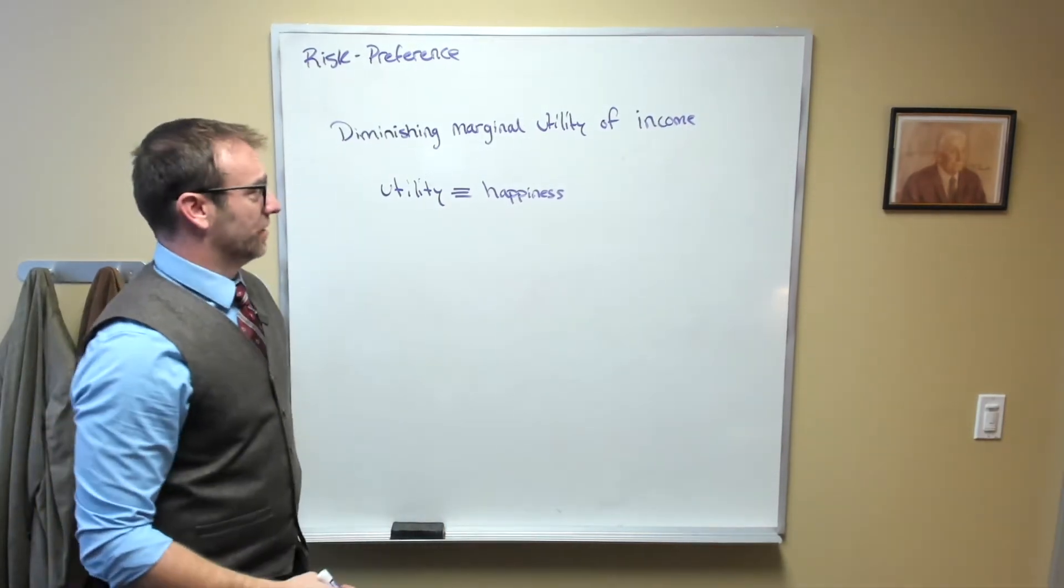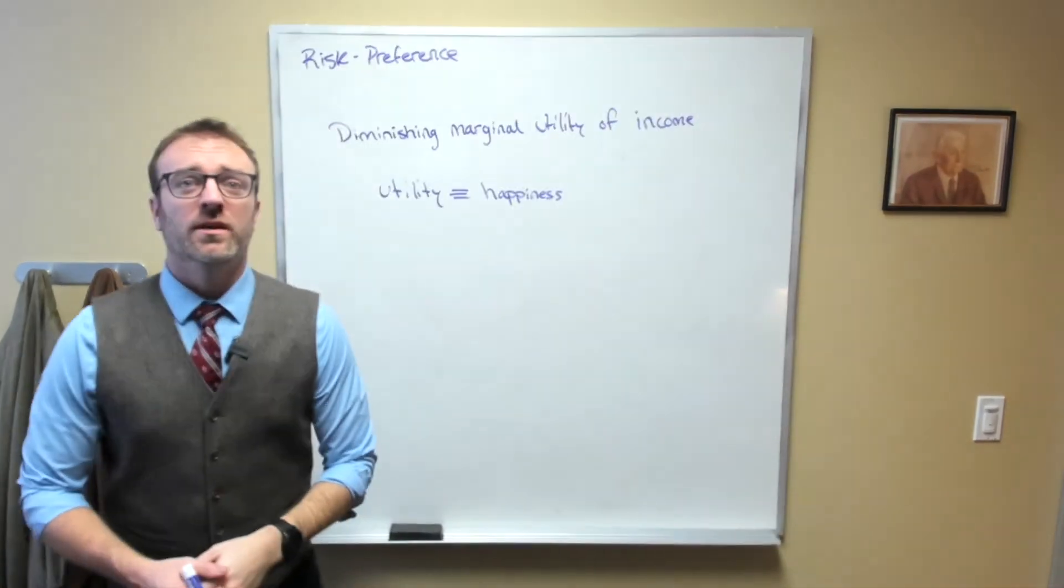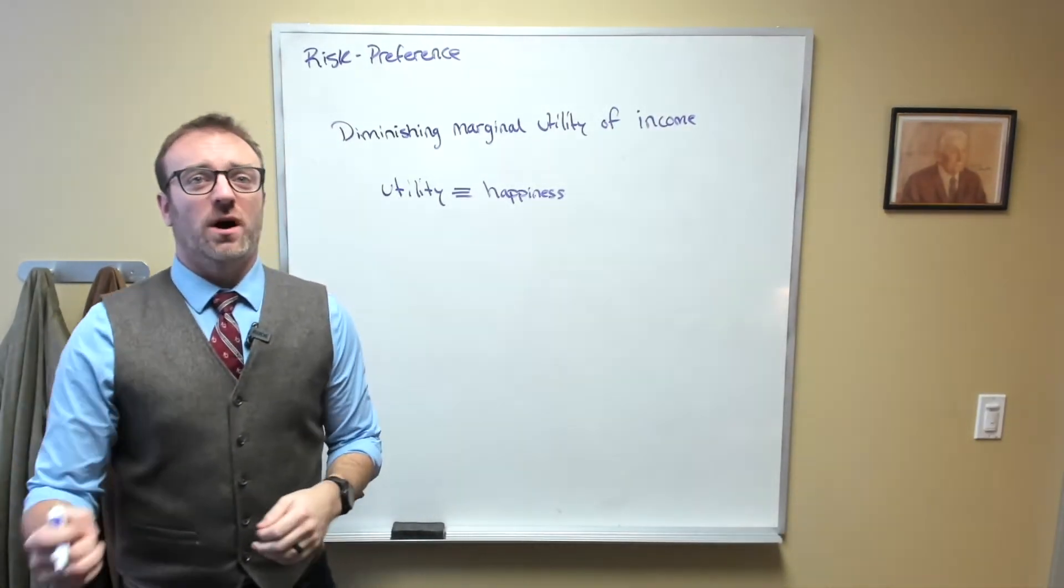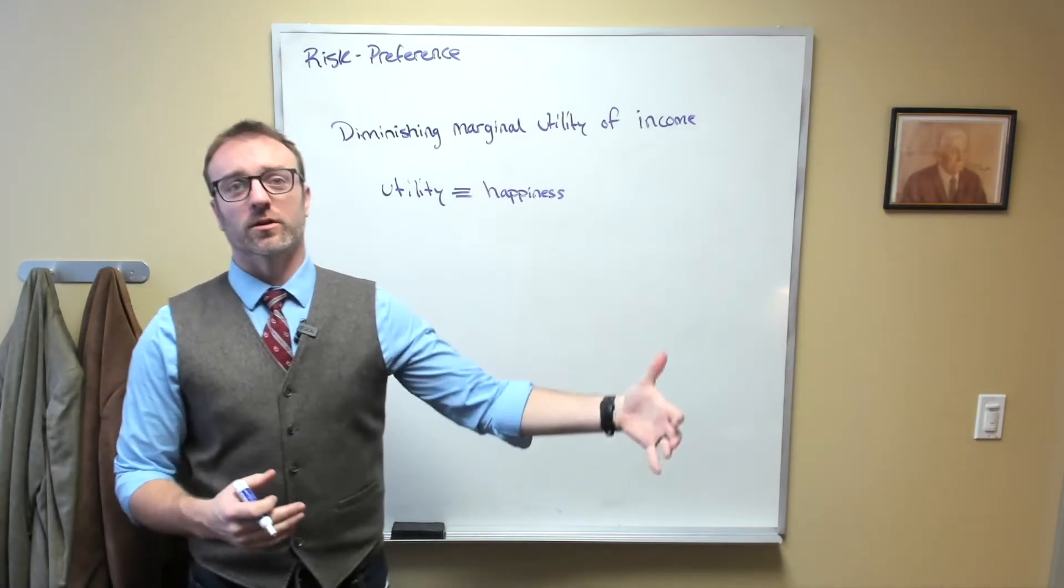So taken together, what diminishing marginal utility of income means is that each additional dollar of income brings you less overall happiness than the dollar before it.